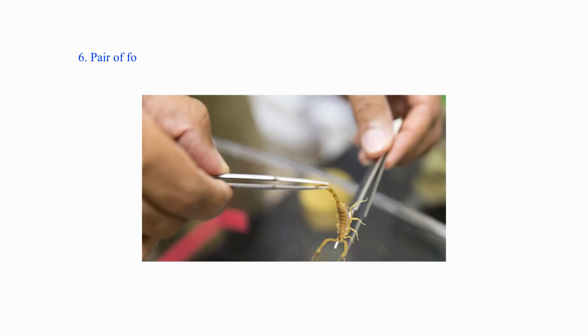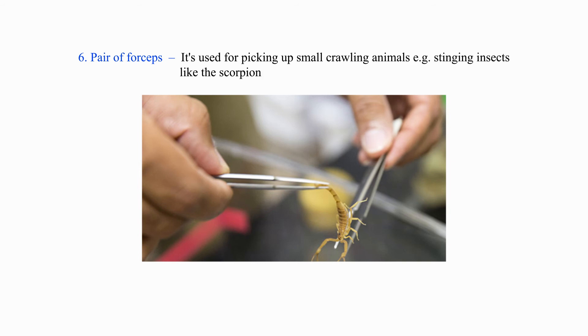6. Pair of forceps — it is used for picking up small crawling animals, e.g. stinging insects like the scorpion, and plants like the stinging nettle.